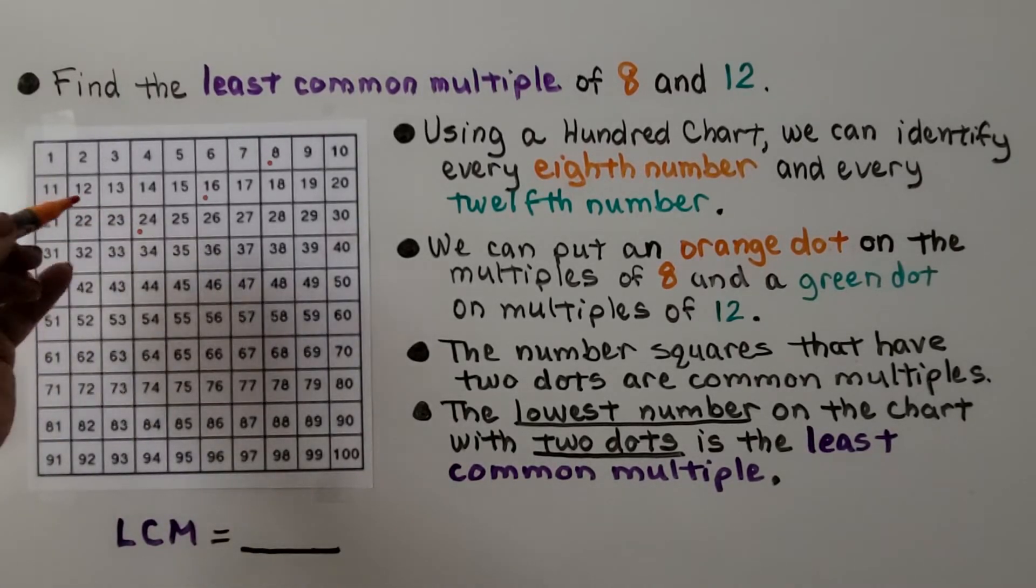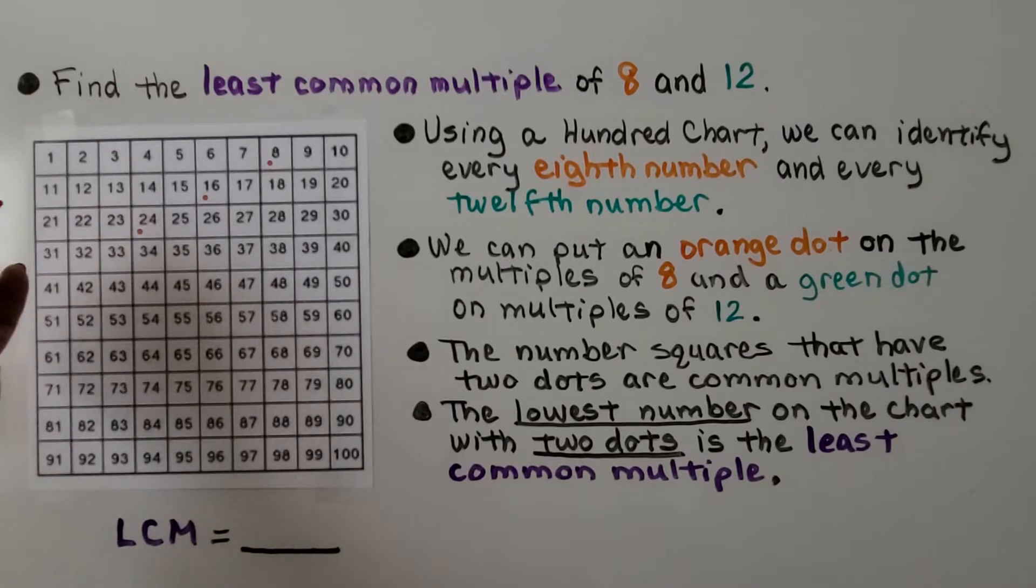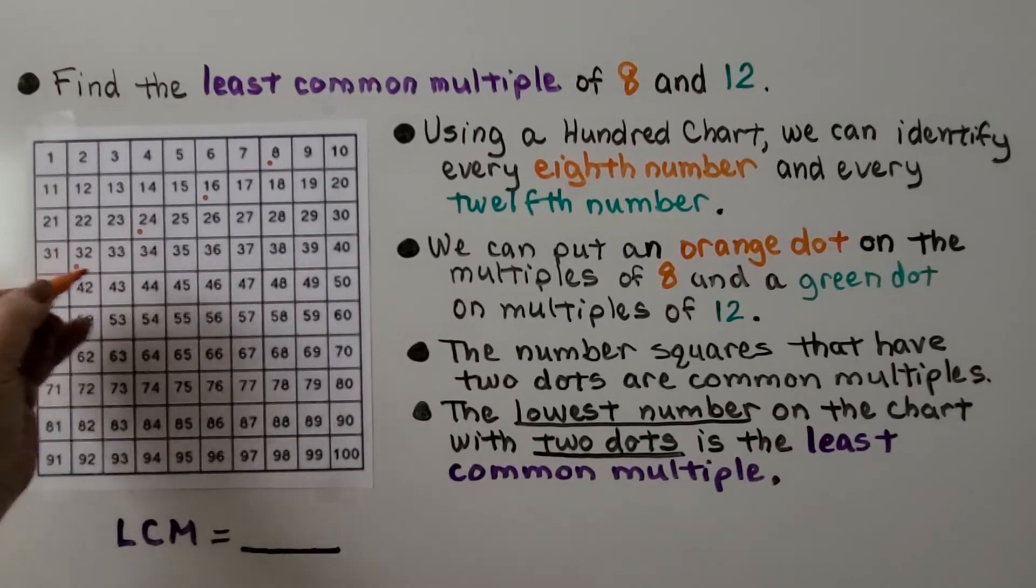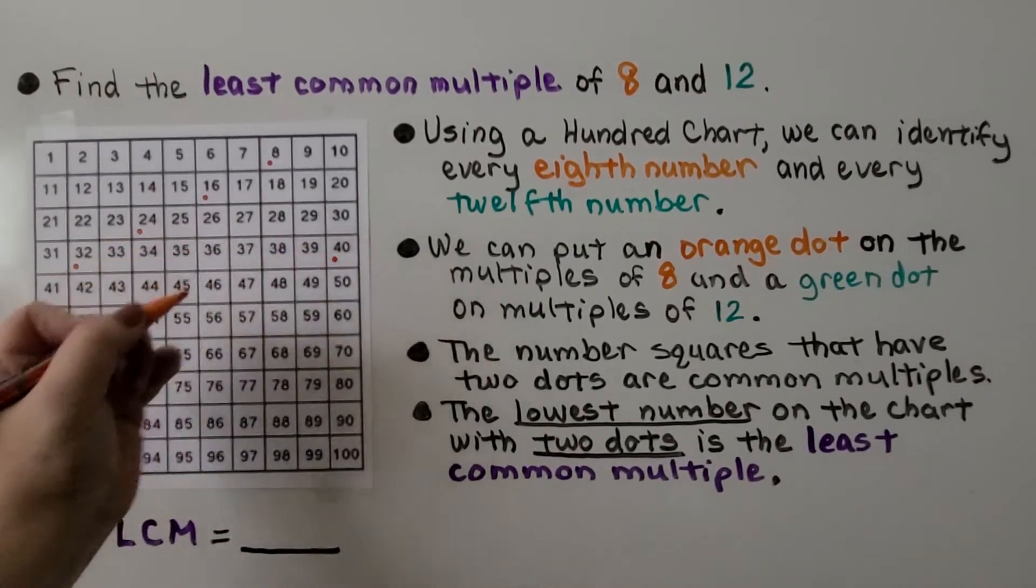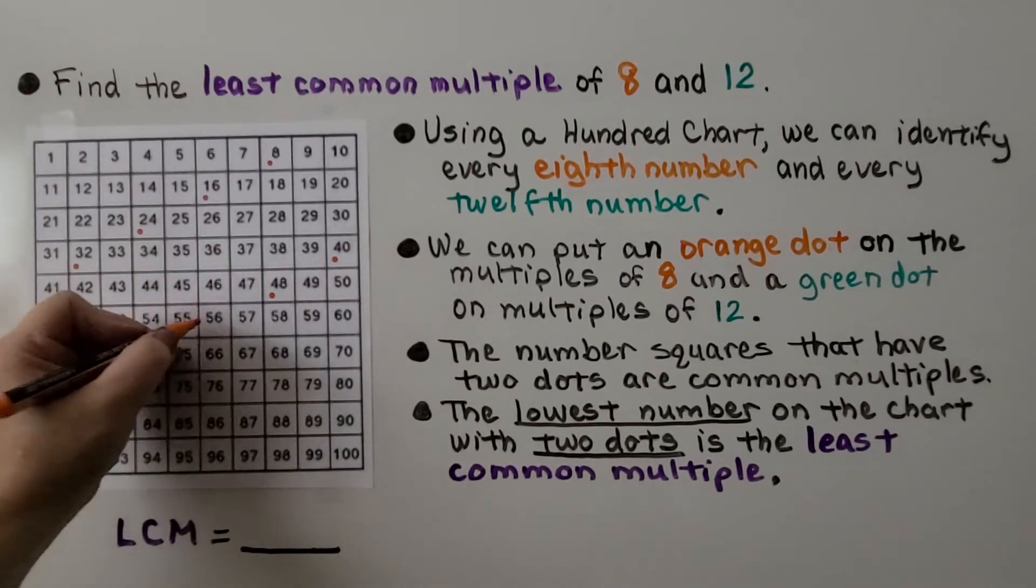And it would be the 8 facts. So the next number would be 8 more. 8 times 3 is 24. 8 times 4 is 32. 8 times 5 is 40. 8 times 6 is 48.